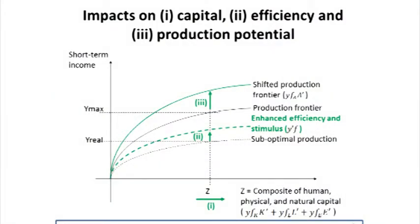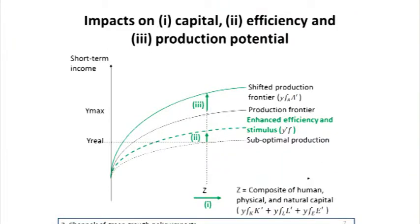Another co-benefit which is really crucial is efficiency. The way we use natural resources today is very inefficient. The way we use energy, water, and land is very inefficient. So by having environmental policies that improve the efficiency of the way we use natural resources, we can simply do more or the same with less. So it's something which is just a win-win — it's better for the environment and it's as good or even better for the economy.